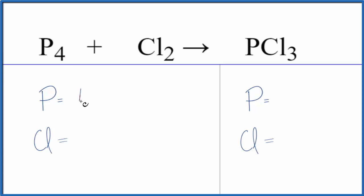We have four phosphorus atoms, two chlorine atoms. Product side we have just one phosphorus and three chlorine atoms.